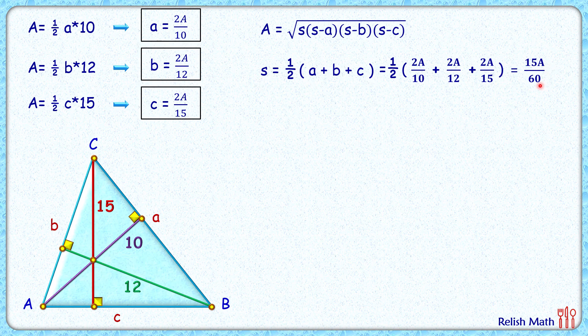And s minus a will be 15A/60 minus 2A/15. Simplifying, s-a will be 3A/60. Same way, s-b will be 15A/60 minus 2A/12.